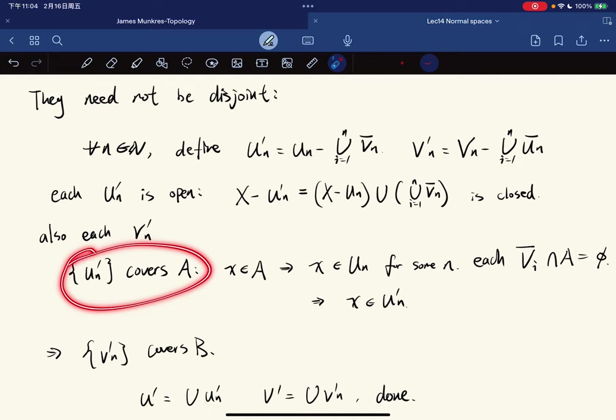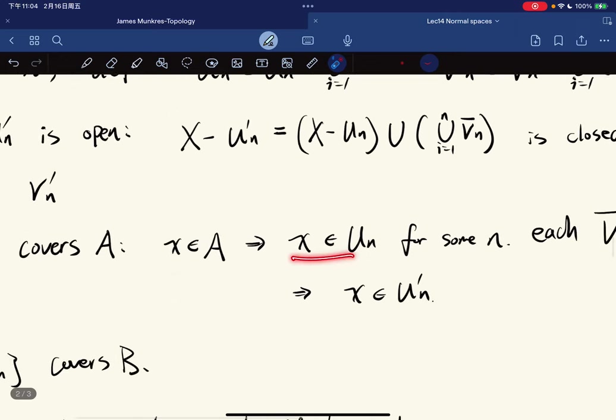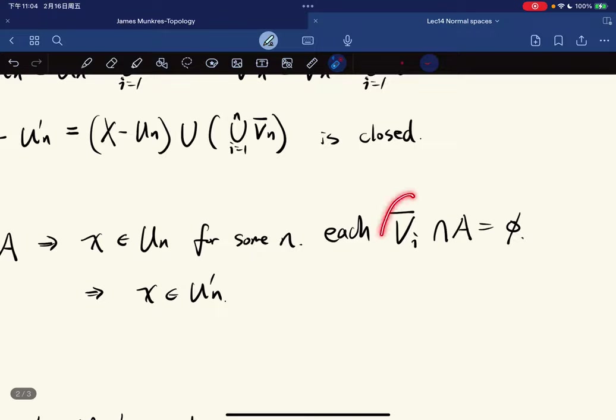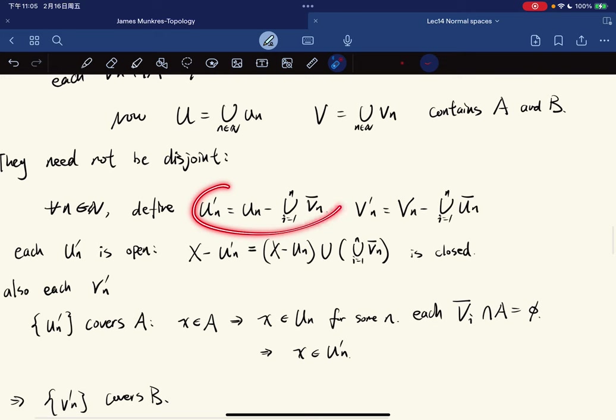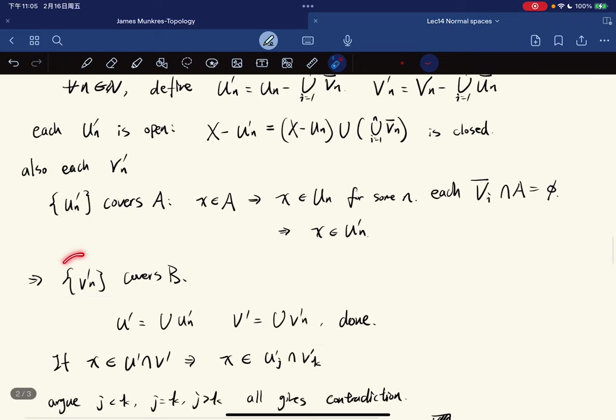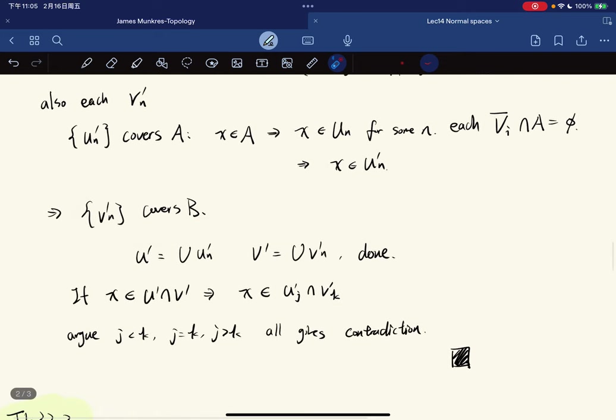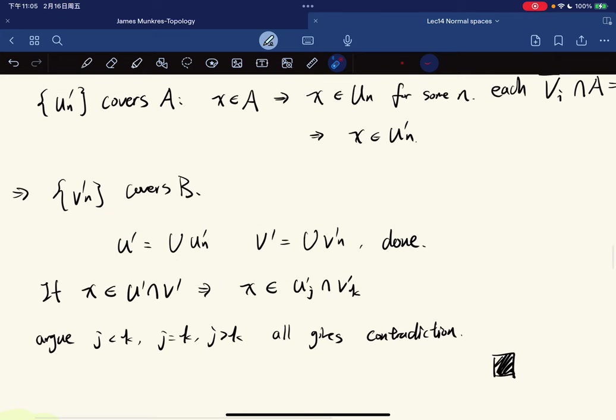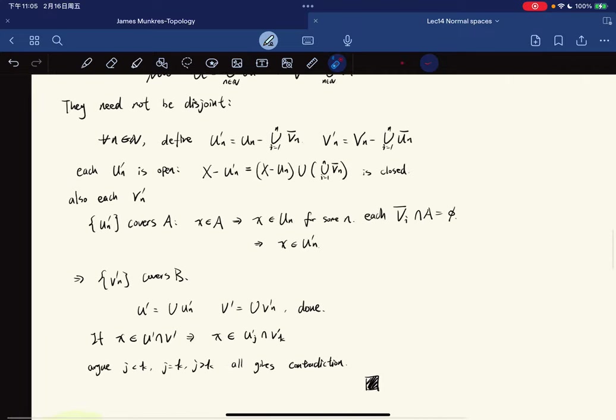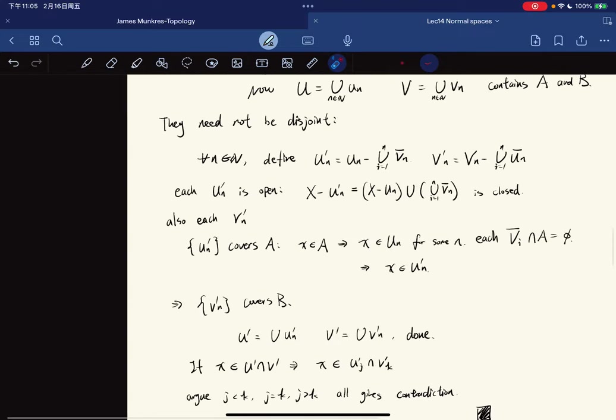And we have this covering A because for each x in A, x is in U_n. And we also know that this is true, which means that we have x in U'_n by our definition. And also the set of V'_n. And for these two sets, they're disjointed, because if x is in U'_j and V'_k, then we argue these three cases and they all give a contradiction, so they're disjointed.